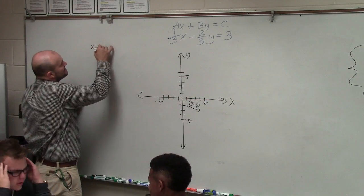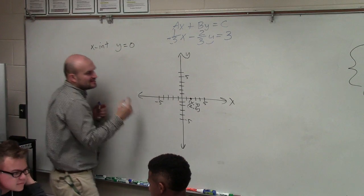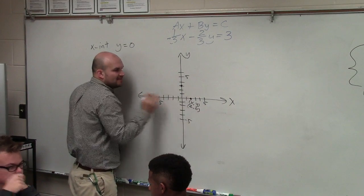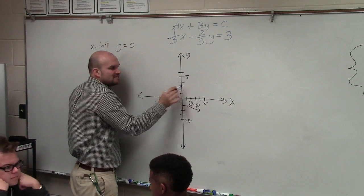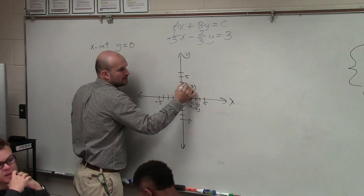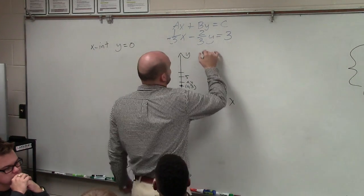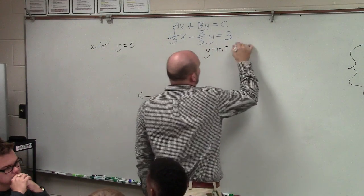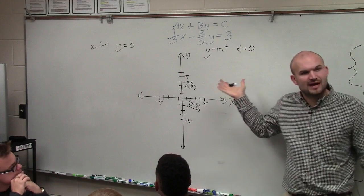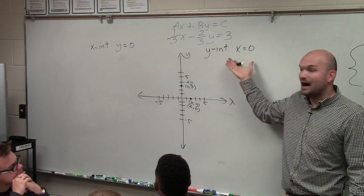In the same regard, if a point lies on the y-axis, I haven't gone left or right, so the x-value is 0. Does everybody agree with me? So now I can say that for the y-intercept, x equals 0. It's very important for you guys to have this distinction between the two: x-intercept, y equals 0; y-intercept, x equals 0.